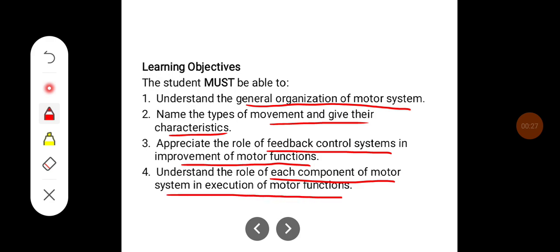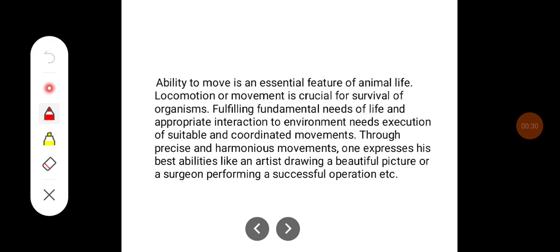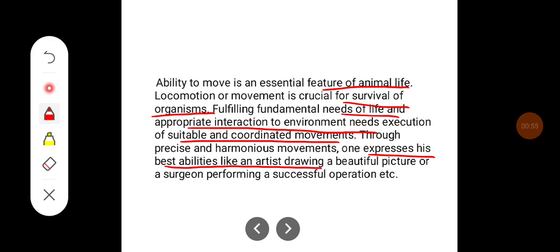The ability to move is an essential feature of animal life. Locomotion or movement is crucial for survival of organisms, fulfilling fundamental needs of life and appropriate interaction with the environment. This needs execution of suitable and coordinated movements. Through precise and harmonious movements, one expresses their best abilities — like an artist drawing a beautiful picture or a surgeon performing a successful operation.